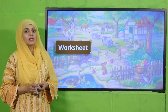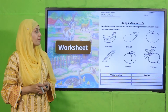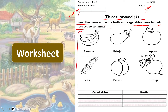Now is the time for practice. You can download this worksheet from the description box below this video, or get it in print form from your teacher. The topic is 'Things Around Us.' Write down your name and class, then read the names and write fruits and vegetable names in their respective columns. For example, banana is a fruit so write it in the fruit column. Brinjal is a vegetable so write it in the vegetable column. Pause the video and complete the worksheet.